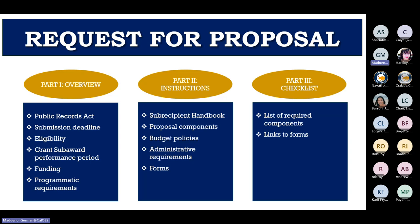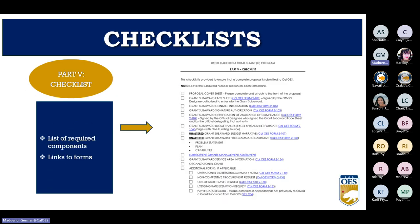Part three is a checklist that includes a list of documents required with the proposal and links to the most current forms. The checklist includes all required components and links to each form. Under the additional form section, these forms may or may not be required depending on what you have in your budget.